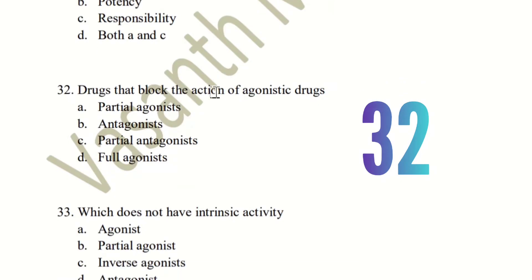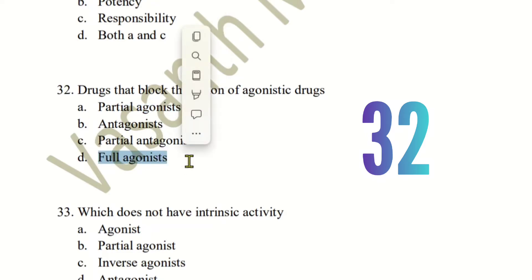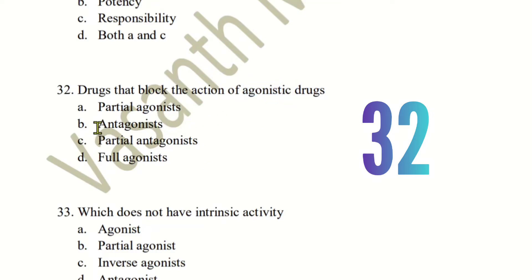Question 32: Drugs that block the action of agonist drugs — that is the agonist activity — what are these drugs called? The choices are partial agonist, antagonist, partial antagonist, and full agonist. The right answer is antagonist. Antagonist is the main goal here — it blocks agonist activity.